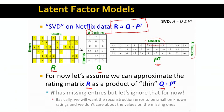There is one slight issue: R really has missing or unknown entries. There are regions of matrix R that are unknown. But for now, let's ignore that. So mathematically, we assume we can take R and factorize it as a product of these two matrices Q and P.